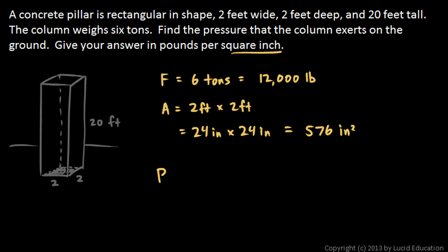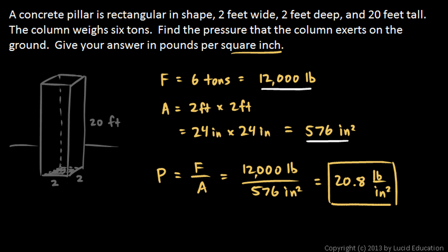And then the pressure is the force divided by the area. So it will be this many pounds divided by this many square inches. So that's 12,000 pounds divided by 576 square inches. And 12,000 divided by 576 comes out to 20.8, and the units, of course, pounds per square inch. So 20.8 pounds per square inch.